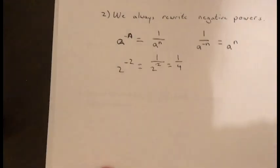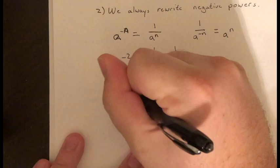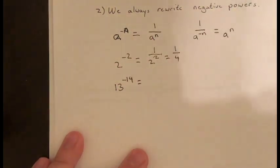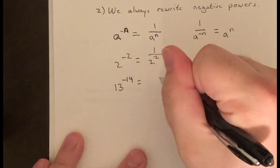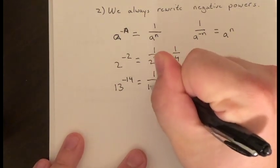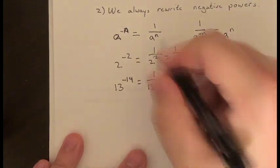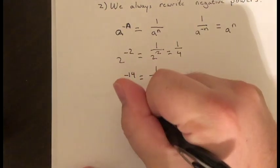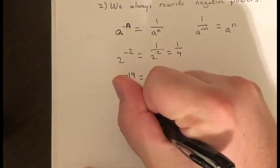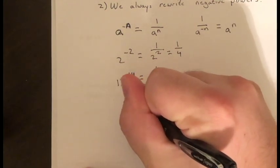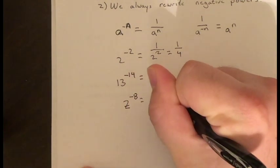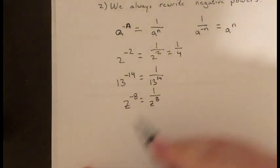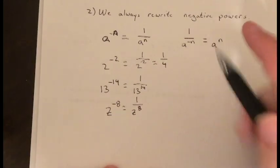Let's give another example. If I have 13 raised to the negative 14 power, I can rewrite it as a fraction: one over 13 to the positive 14th power. I can do this with any variable too — z raised to the negative eight power equals one over z to the positive eight power.